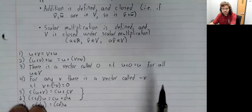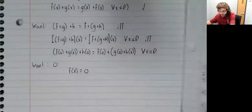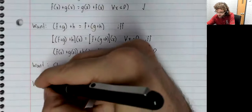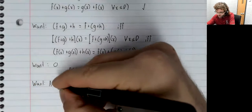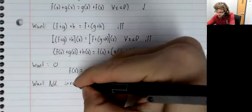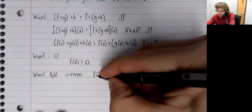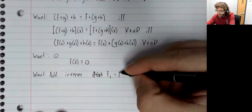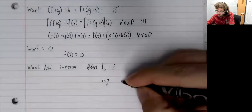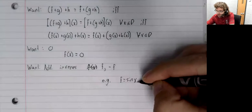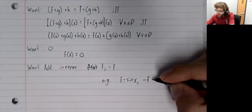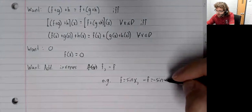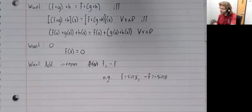Functions should have additive inverses. Well, they do. If we have a function f, we can define a negative f in the natural way. For example, if you have the sine function, then negative f is the negative sine function.